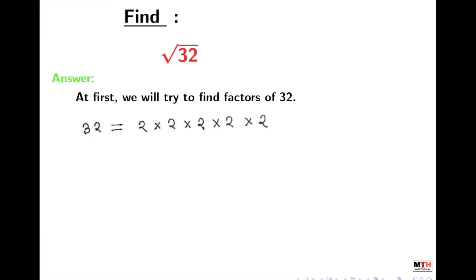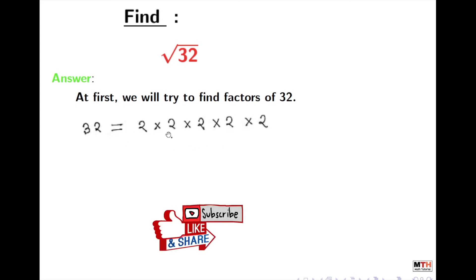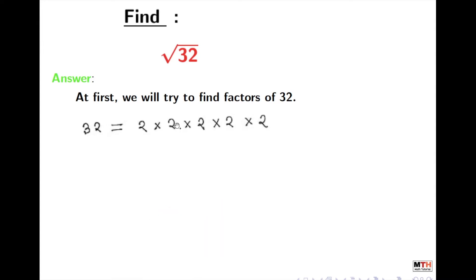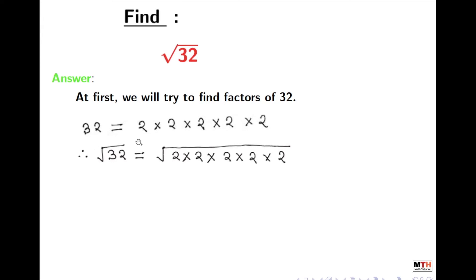If we look at 32, we will get 2 times 2 times 2 times 2 times 2, and this equals 32. Now we will take the square root of this, and putting the square root on both sides we get: